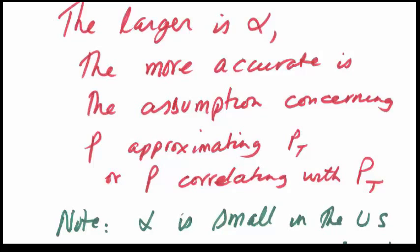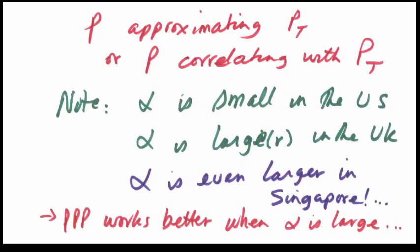The larger is alpha the more accurate is the assumption concerning the domestic price level being approximated by traded prices or correlating with traded prices. We therefore reiterate our point that PPP works better when alpha is large, when the country is heavily dependent on international trade.